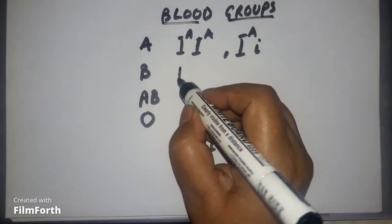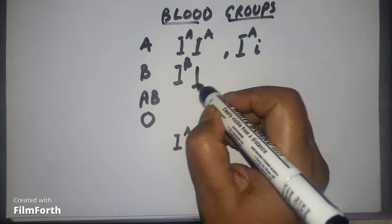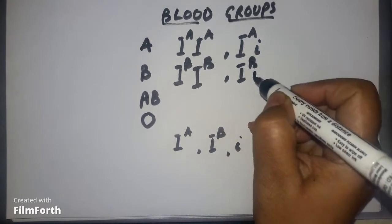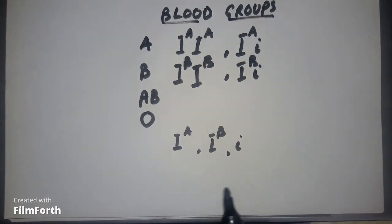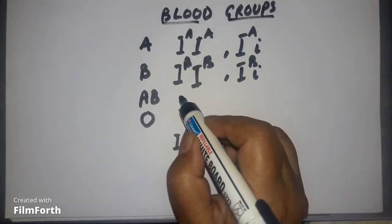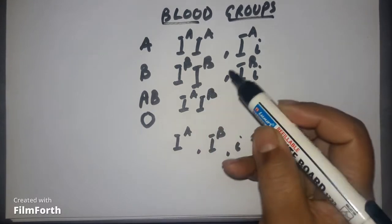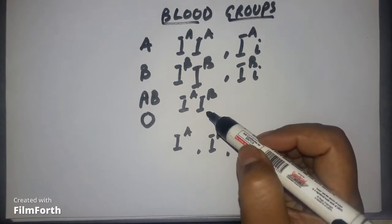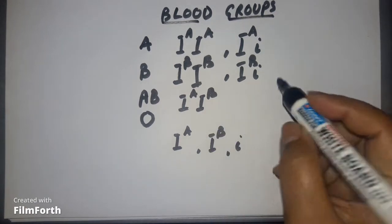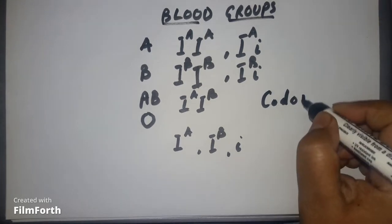Similarly, B type of people will have a specific allelic pair or combination. AB type has both dominant genes — the A protein-producing and B protein-producing allelic combination. This phenomenon is called co-dominance.